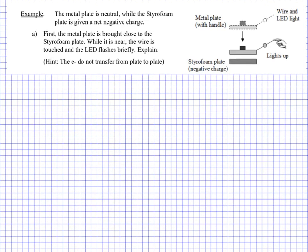In this example, we've got our styrofoam plate with a little LED attached to it. The styrofoam plate is on the bottom, there's a metal plate — in class we use little pie trays to do this. So we have a little pie tray, the metal plate, and then this insulated rubber handle on top, so we're able to hold the metal plate without conducting charge away from it. Underneath we have the styrofoam plate. What we do is charge the styrofoam plate and make sure it's negatively charged — we rub it with fur. Then we move this metal plate with an LED attached to it near to the top of the styrofoam plate. The metal plate is brought close to the styrofoam plate, and while it is near, the wire is touched and the LED flashes briefly. So we need to try and explain that.